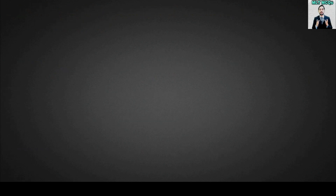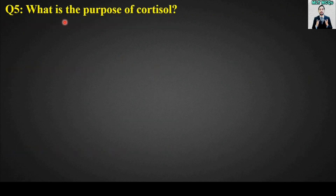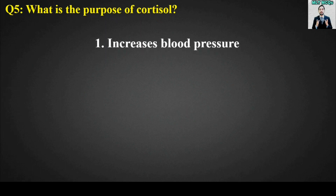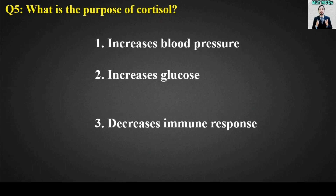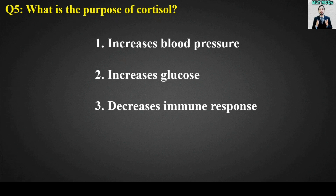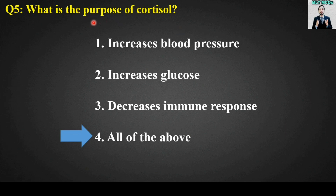MCQ number 5: What is the purpose of cortisol? Options are: increase blood pressure, increase glucose, decrease immune response, or all of the above. The right answer is option number 4, all of the above. The purpose of cortisol is to increase blood pressure, increase glucose, and decrease immune response.